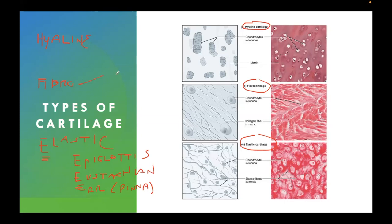For the fibrocartilage, we have the intervertebral disc and we have the symphysis pubis. These are the classic examples of fibrocartilage.